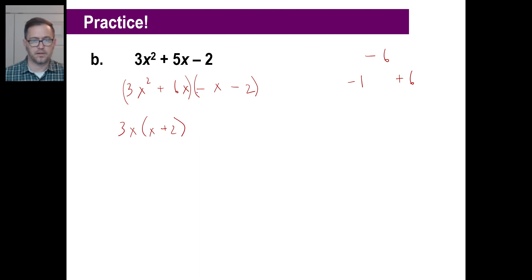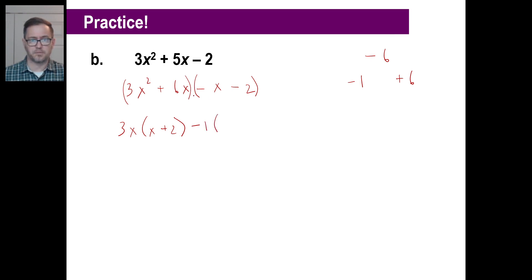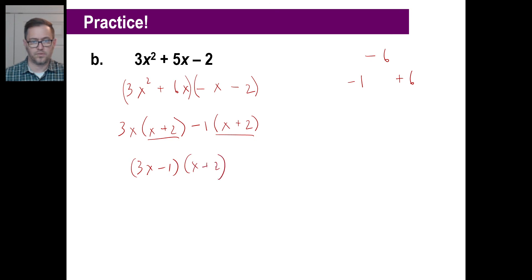For the second group, negative x minus 2, if you pull out just 1 you get negative x minus 2, which has the opposite sign from x plus 2. So instead, pull out negative 1: that gives negative 1 times x plus 2. Now both groups share x plus 2, so combine the outer terms: 3x minus 1. The final answer is (3x − 1)(x + 2).